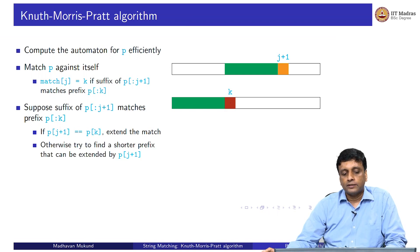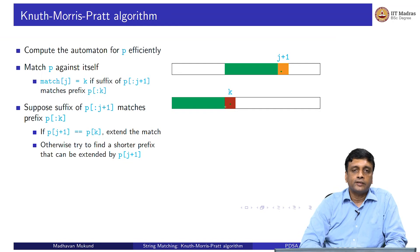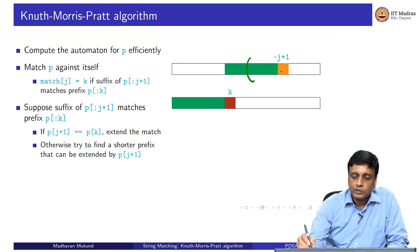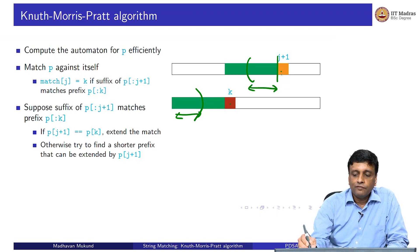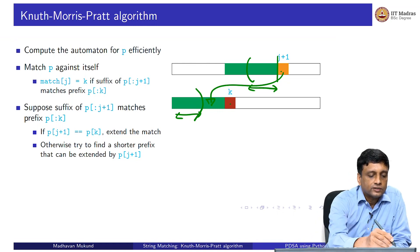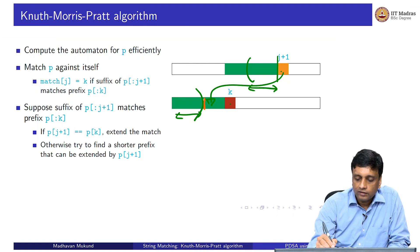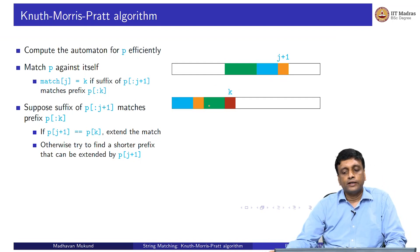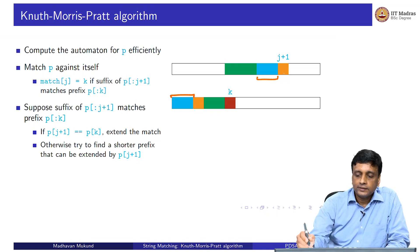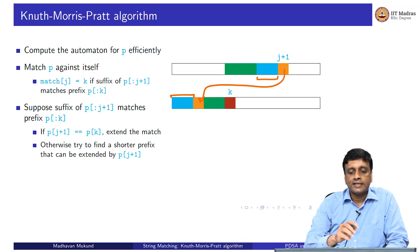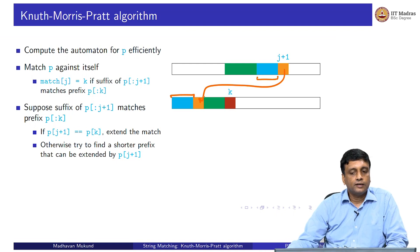But what happens if the letters do not match? If I have some letter here which is different from some letter here, our goal is to find some shorter suffix such that if I take that shorter suffix, I will find an extension — an orange extension. So we are trying to find a shorter suffix that matches a shorter prefix, but where the next letter (orange) happens to match, so I can extend the blue suffix by orange and expand the corresponding blue prefix by orange.